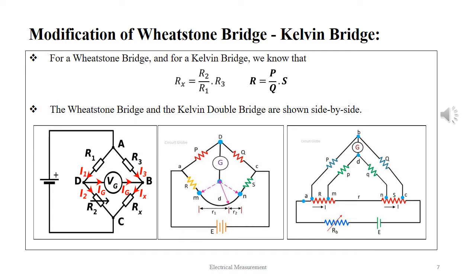Here we see three schematic representations: a standard Wheatstone bridge, a simply modified Kelvin double bridge, and an industry-grade Kelvin double bridge. For the Wheatstone bridge, the balance equation is Rx = (R2/R1) × R3, and for the Kelvin bridge it is R = (P/Q) × S. The two bridges differ only by the addition of an extra set of arms marked as MN in the simple version and as small p, small q in the modified version.